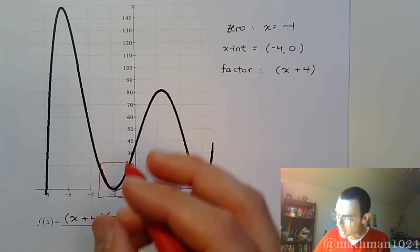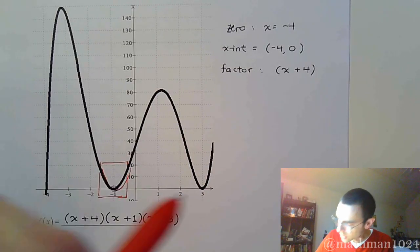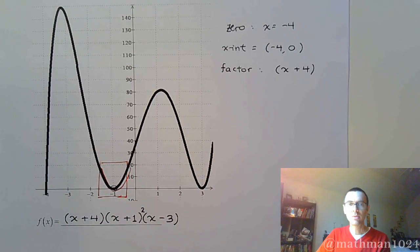When it bounces off, it goes back to what we talked about in the last video, where we have a multiplicity. And so when you bounce off like that, that's going to come from you having a factor that is squared. So that's x plus 1 squared.